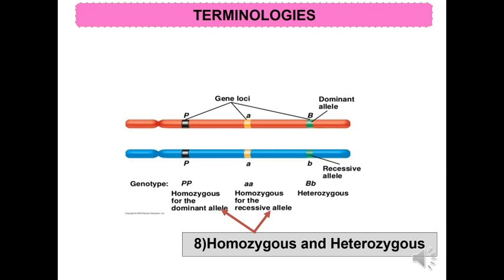A homozygote is when an individual has two identical alleles for a given gene. A heterozygote is when an individual has two different alleles for a given gene. Capital letters always precede lowercase letters, and a heterozygote pair only determines dominant traits.